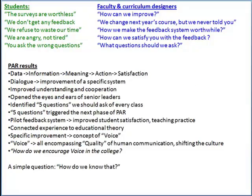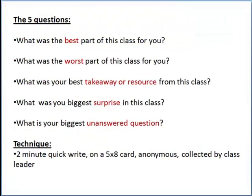I now want to drill a little bit deeper into the five questions, which was one of the next cycles of participatory action research. The five questions that students decided we should be asking were: what was the best part of the class for you, the worst part? What was your best takeaway or resource from this class? What was your biggest surprise? And what is your biggest unanswered question? By way of technique, we asked the students to conduct a two-minute quick write on a five-by-eight card anonymously, collected and turned in by the class leader.